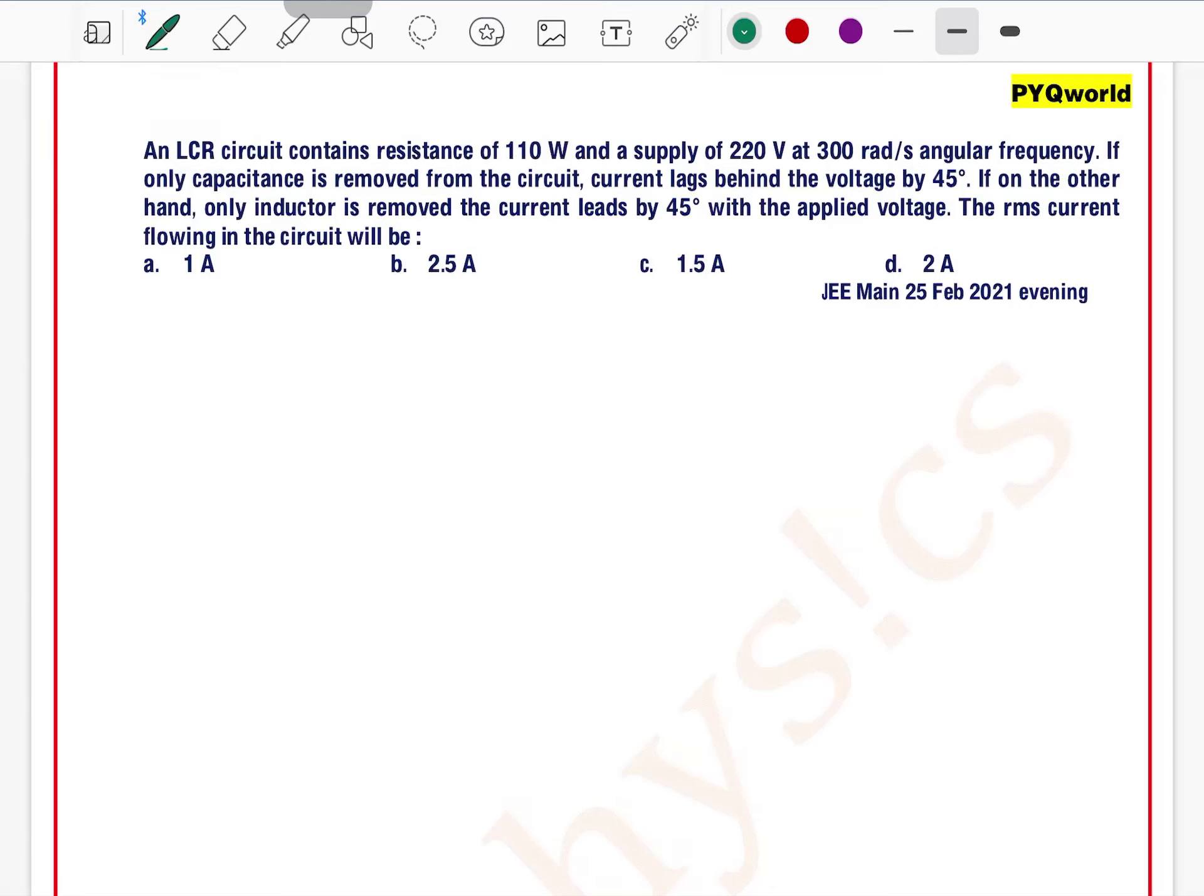An LCR circuit contains resistance of 110 W. Actually, it should be 110 Ohm, right? I have a typing mistake. And a supply of 220 V at 300 radian per second. So, resistance is equal to 110 Ohm and supply voltage ERMS is up to 220 V at a frequency of 300 radian per second.